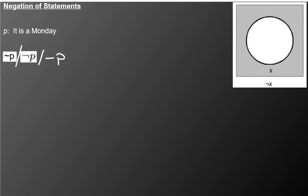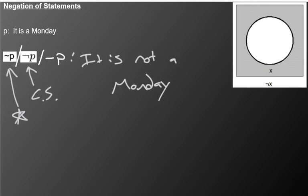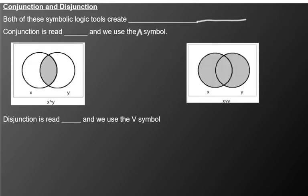Once you have the symbolic form, you can start doing operations. The most simple one is negation. There are three different ways to write it — the book we use prefers one, but you might see others, especially in computer science. All of these read as 'it is not Monday.' If you think about it as a picture, the negation is everything outside the set — all the things that are 'not Monday.'